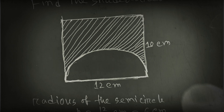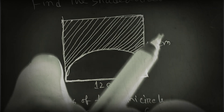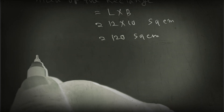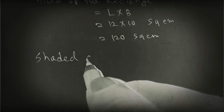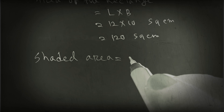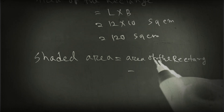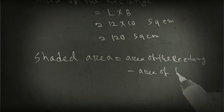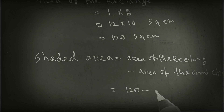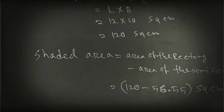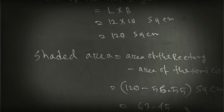Now we find the whole area. If we subtract the semicircle area from the whole rectangle area, we can find the shaded area. Shaded area equals area of rectangle minus area of semicircle: 120 minus 56.55 square cm. Subtracting gives us 63.45 square cm.